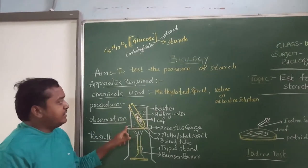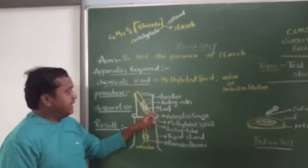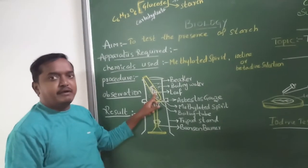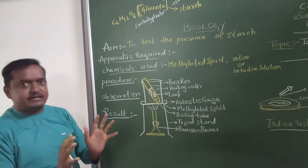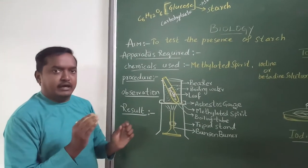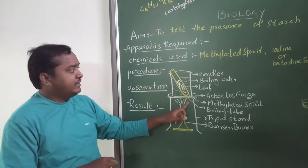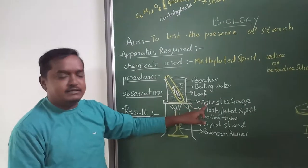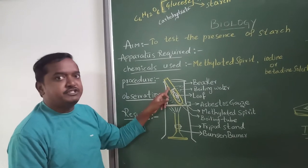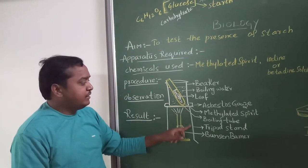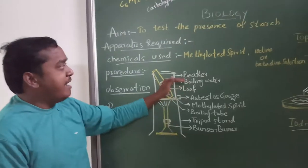The apparatus needed are: a beaker, a boiling tube, a colorless boiling tube, a leaf from a potted plant — a well-chlorophylled green-color leaf — an asbestos sheet, a test tube, a boiling tube (note: a boiling tube is different from a test tube), a tripod stand, and a Bunsen burner.